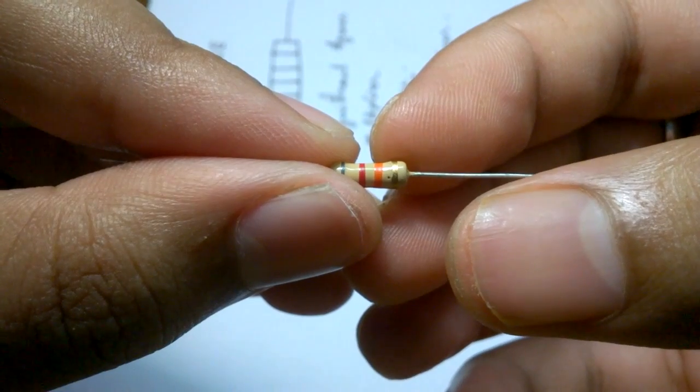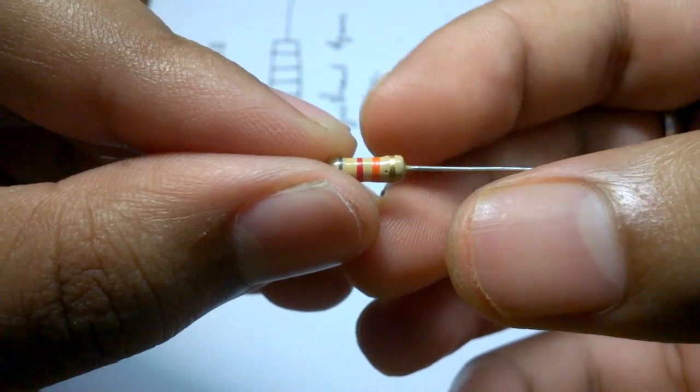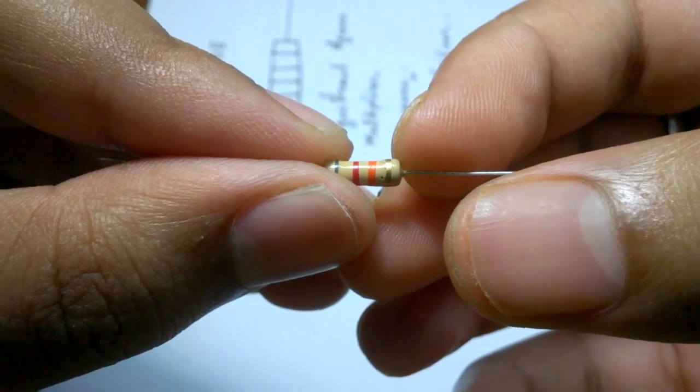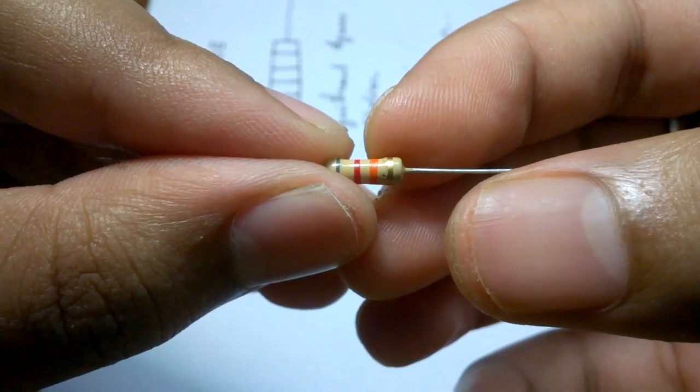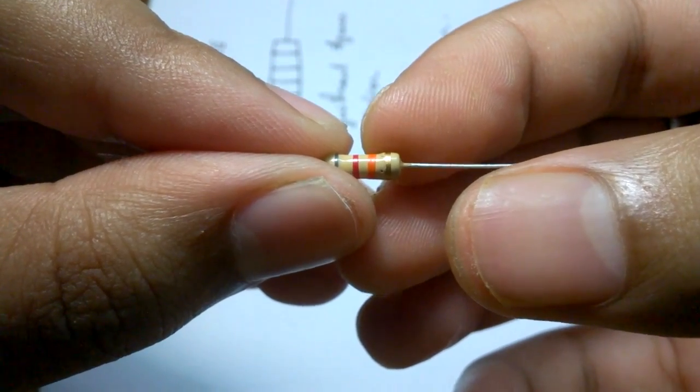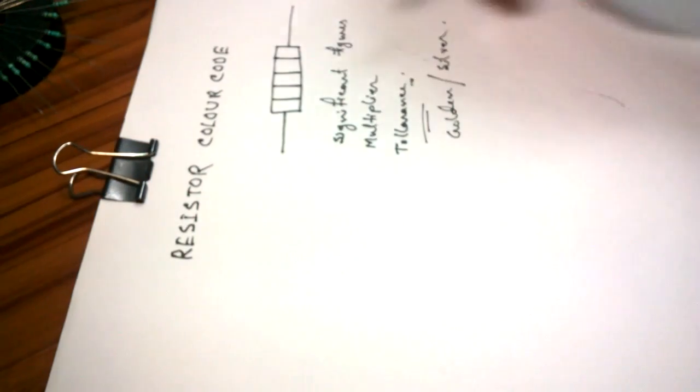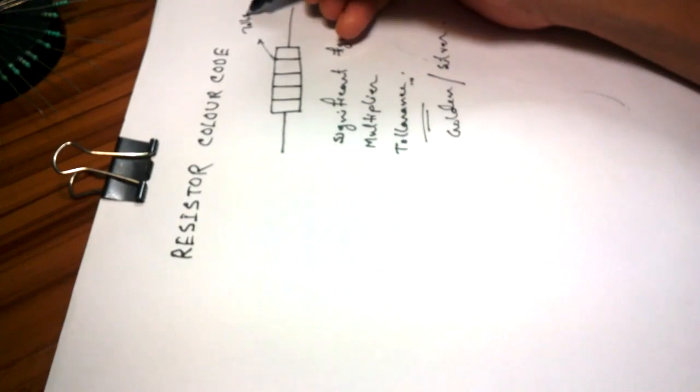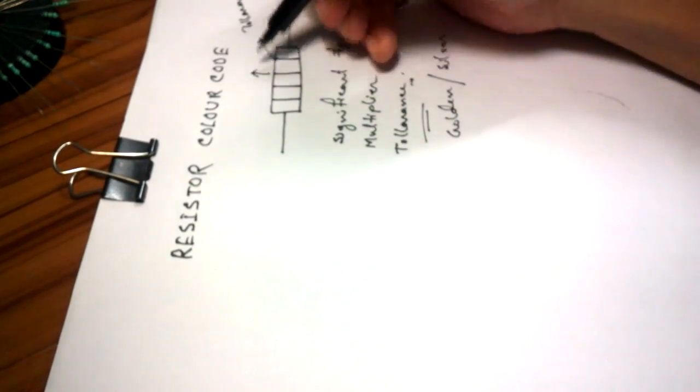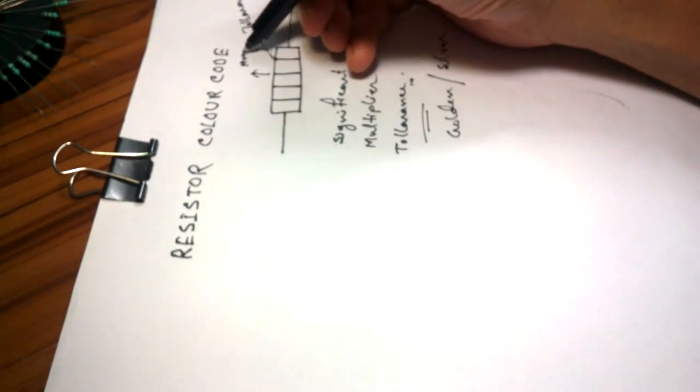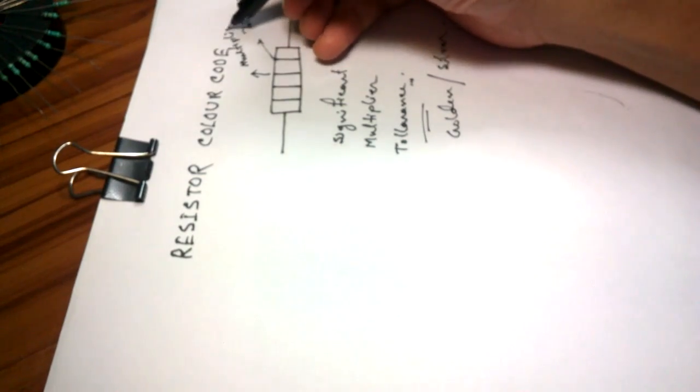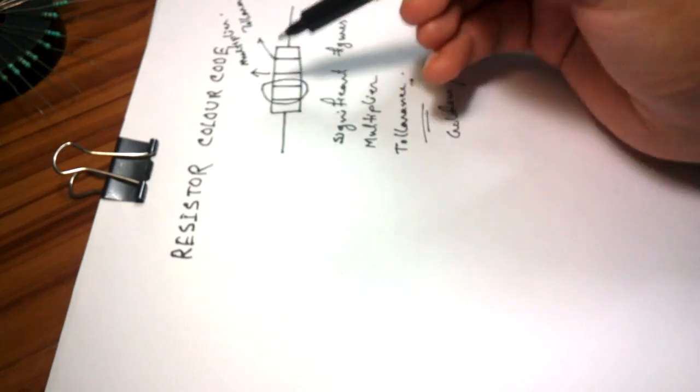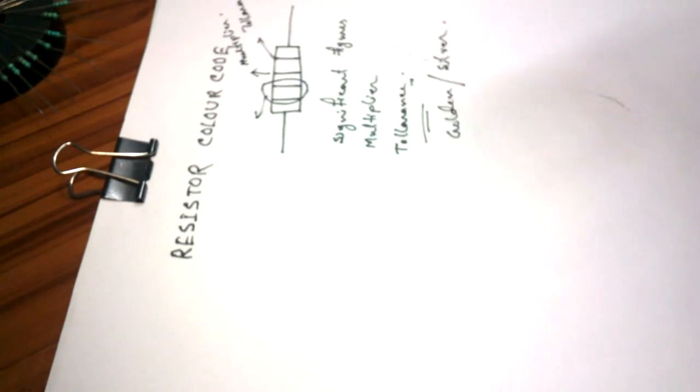And the second last band is Multiplier. Last band is Tolerance, second last band is Multiplier. Okay. So, the last band is Tolerance, second last band is Multiplier. The rest are Significant Figures.